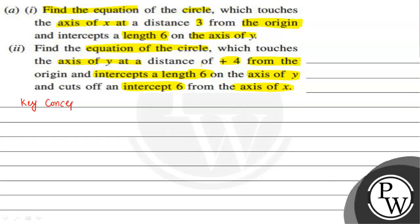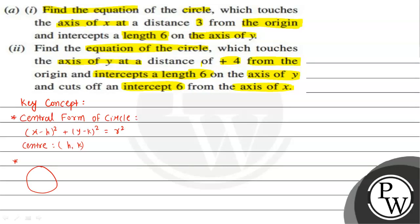The key concept to solve this question is the central form of a circle, given by (x minus h) whole square plus (y minus k) whole square equals r square, where h and k are the center coordinates and r is the radius. The second concept is: if a perpendicular is drawn from the center O to a chord AB at point M, then OM bisects the chord, meaning AM equals BM.